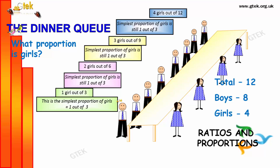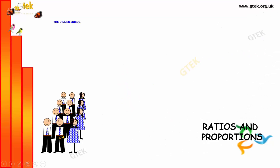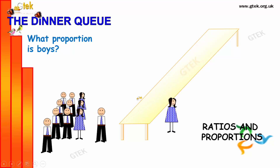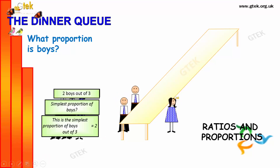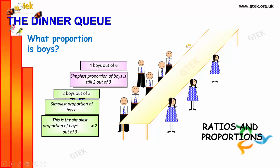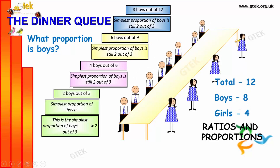Let's see a different perspective of proportions with boys. We got 2 boys out of 3 people. We got 4 boys out of 6, 6 boys out of 9, 8 boys out of 12 — you can see here.